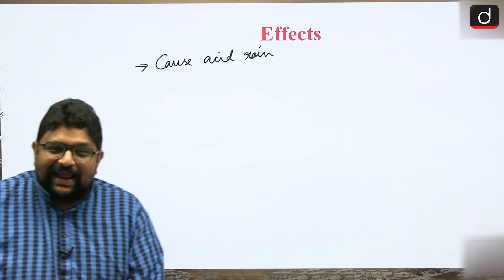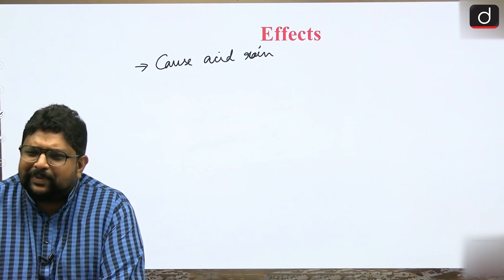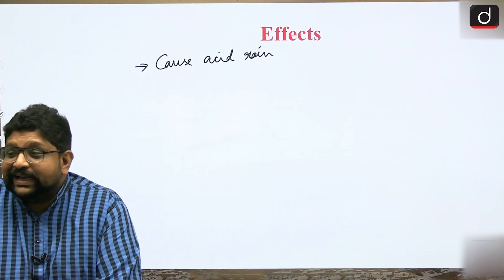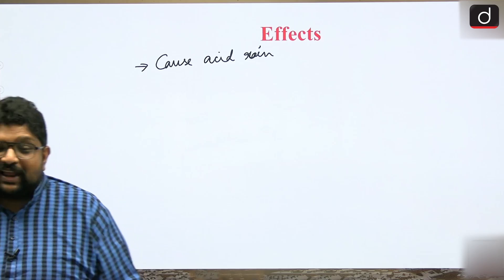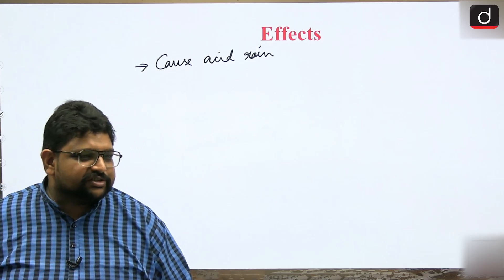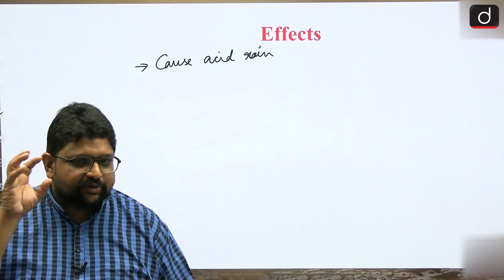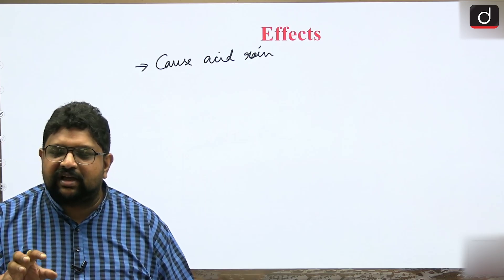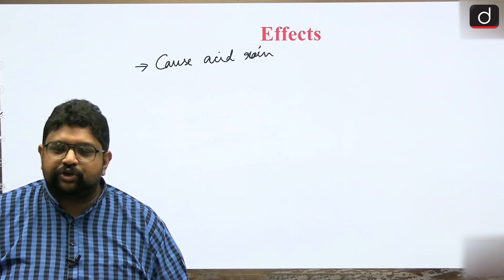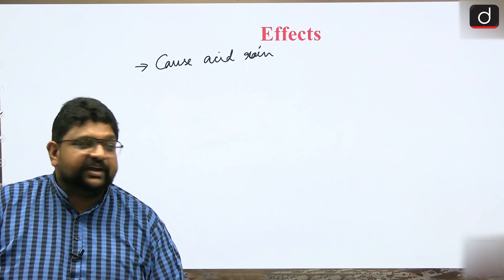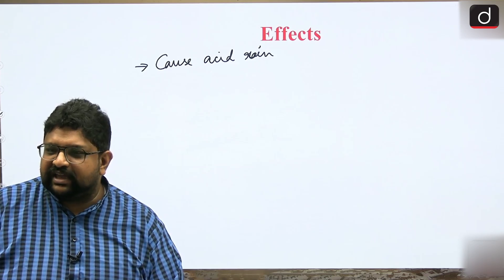In plants, sulphur dioxide causes injuries. Some plants are called indicator species - similar to keystone species and flagship species. An indicator species is one whose presence or change helps us find out the environmental condition of the atmosphere.